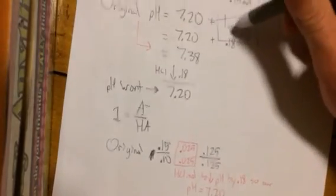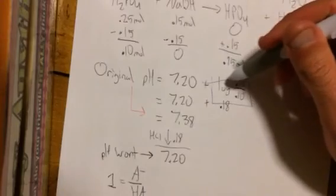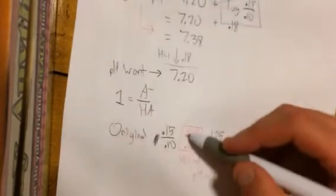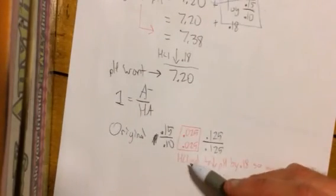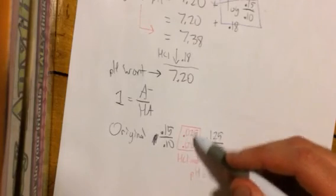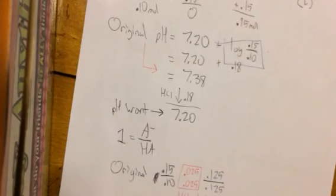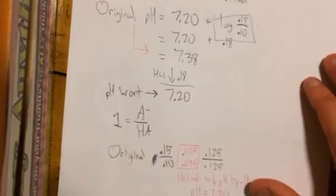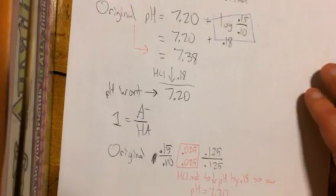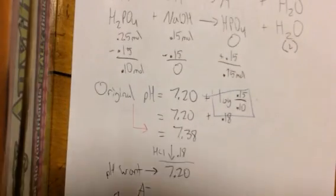Because again, this section now equals 0 since we dropped the pH by 0.18 because we added HCl moles of HCl into the buffer system. So hopefully that helps you a little bit, and stay tuned for the next video.